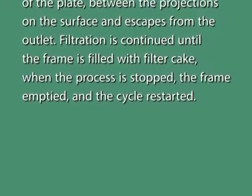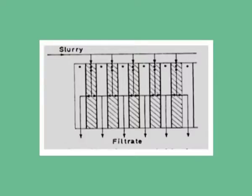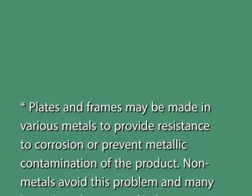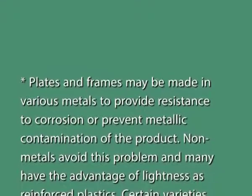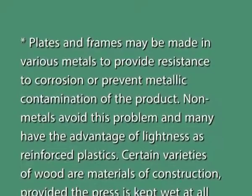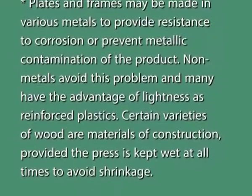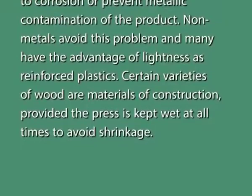Filtration is continued until the frame is filled with the filter cake. When the process is stopped, the frame is emptied and the cycle restarted. In practice, a large number of plates and frames are arranged alternately and clamped in a supporting structure. This gives a number of filtration units operating in parallel with a filtration area as large as necessary. The thickness of the cake can be varied by using frames of different thicknesses. Plates and frames may be made in various metals to provide resistance to corrosion. Certain varieties of wood are materials of construction provided the press is kept wet at all times to avoid shrinkage.